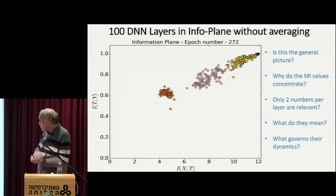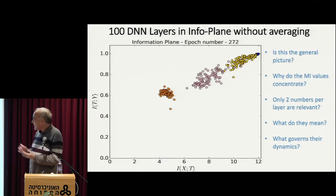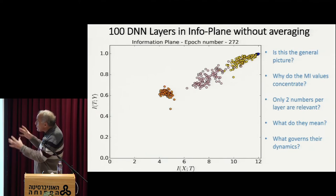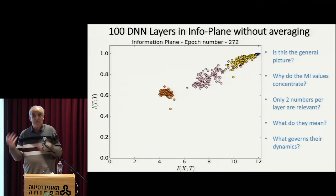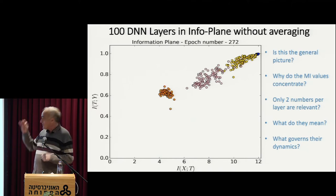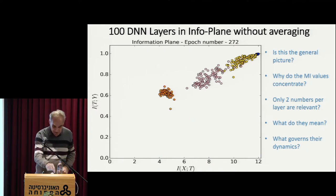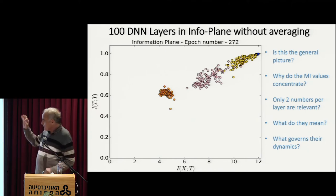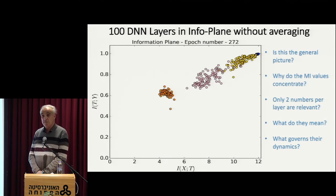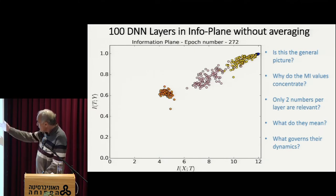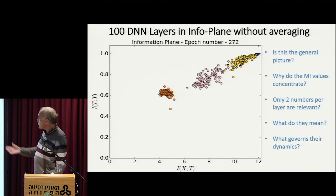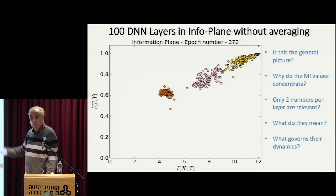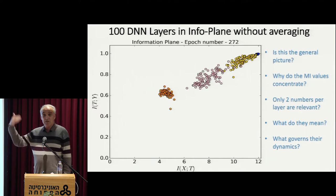The concentration, to me, is a key point. It means that these two numbers somehow seem to be invariant to many other things. You see especially in the last layer a very sharp concentration of these 100 networks. The other layers are not so sharp, but I'm going to prove that it's going to get sharper and sharper the larger the network or the larger the input.